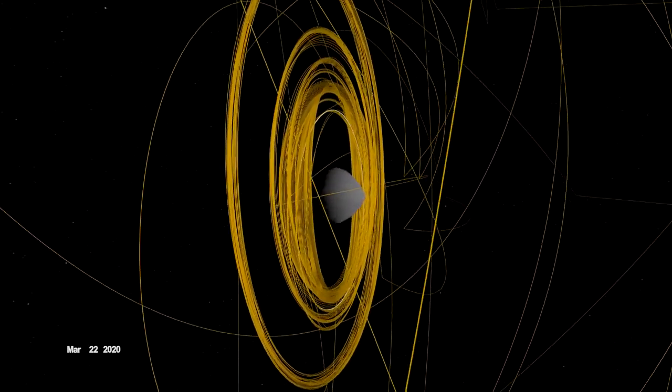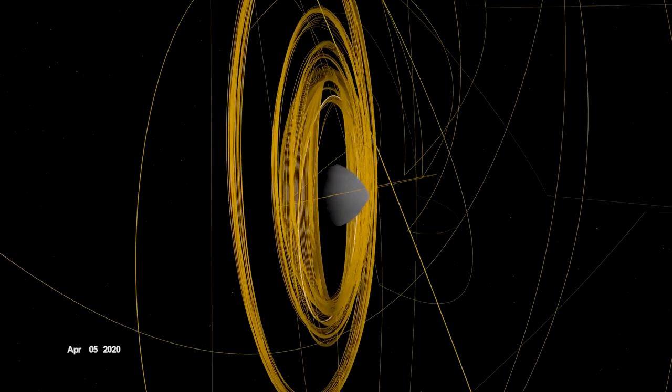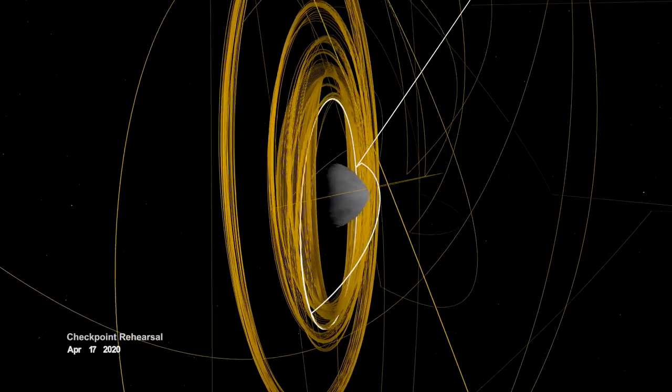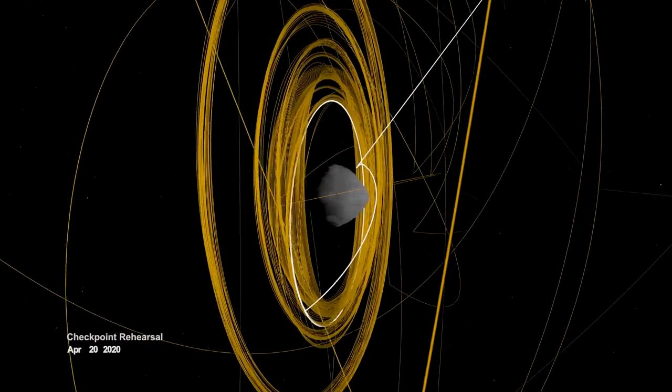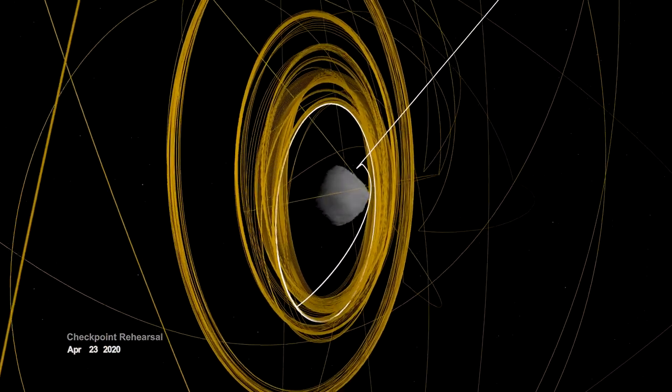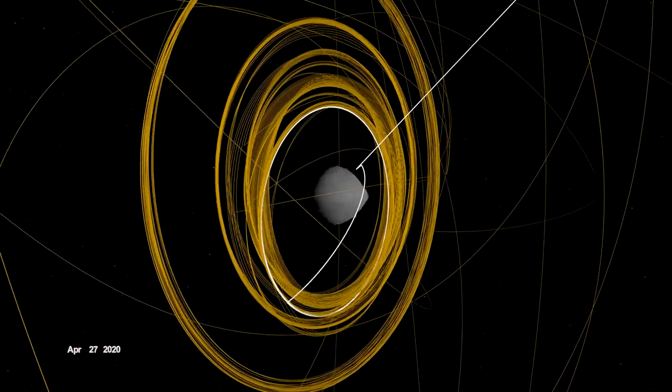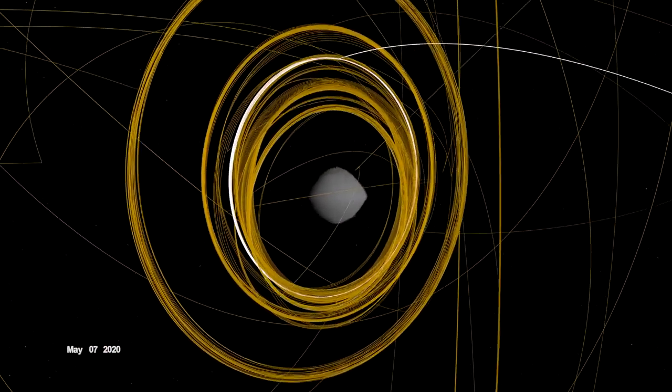In mid-April, OSIRIS-REx performed the first of two rehearsals prior to sample collection. It navigated to a predetermined checkpoint about 125 meters above Bennu, then descended to within 65 meters before backing away.